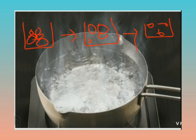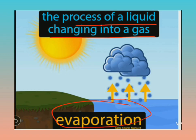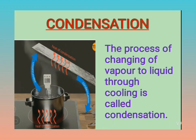So this is evaporation. We can say: the process of a liquid changing into a gas is known as evaporation. Simple — paani se bhaap ka banna (formation of steam from water) is evaporation. The formation of water vapors from water is known as evaporation. Now come to the next process.